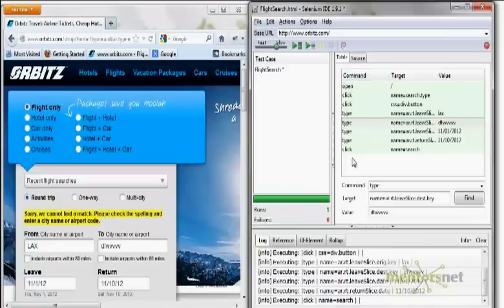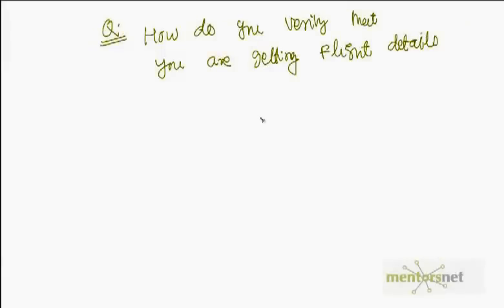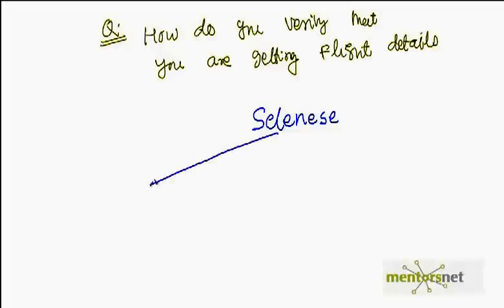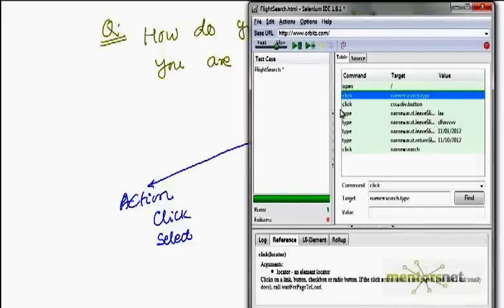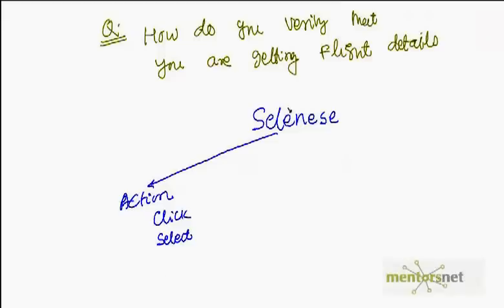To do that, let's understand what different types of commands are available in Selenium. On the very left side you can see the commands: open, click, type. There are three different kinds of commands. These are called Selenium commands and they are divided into three categories. The first category is called Action. An example of an action is going to a web application and clicking on a radio button or selecting something — that is an action-type command. In our case we have two action commands: click and type.